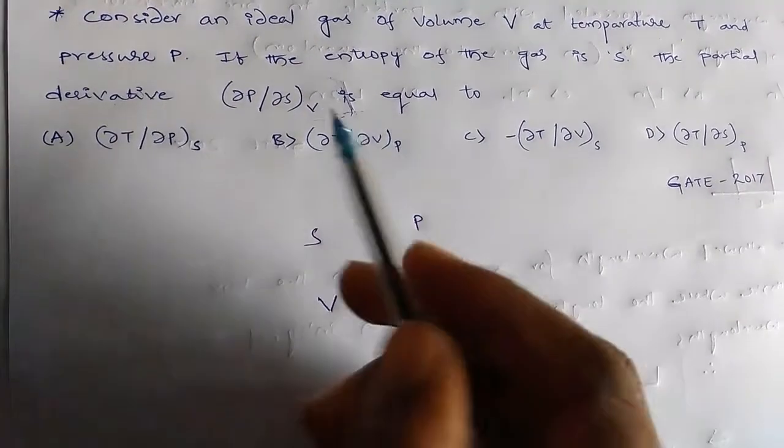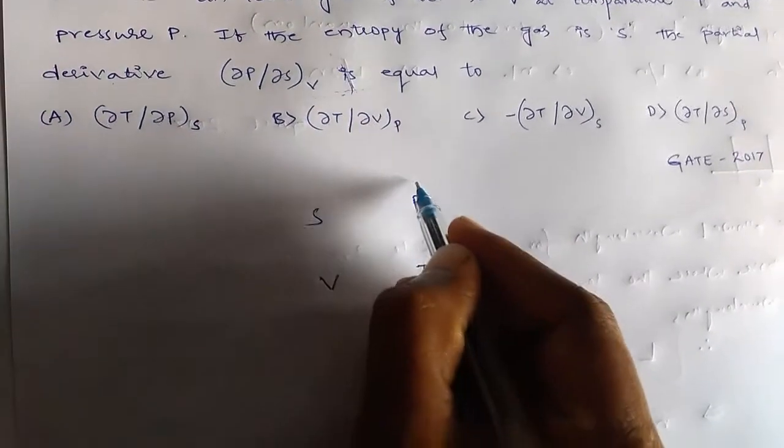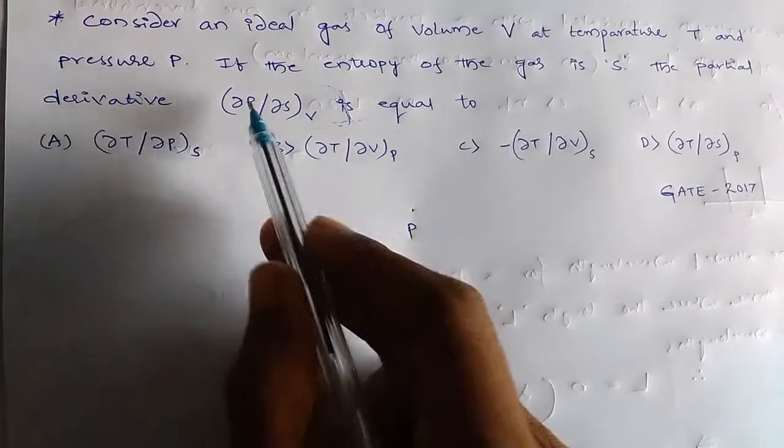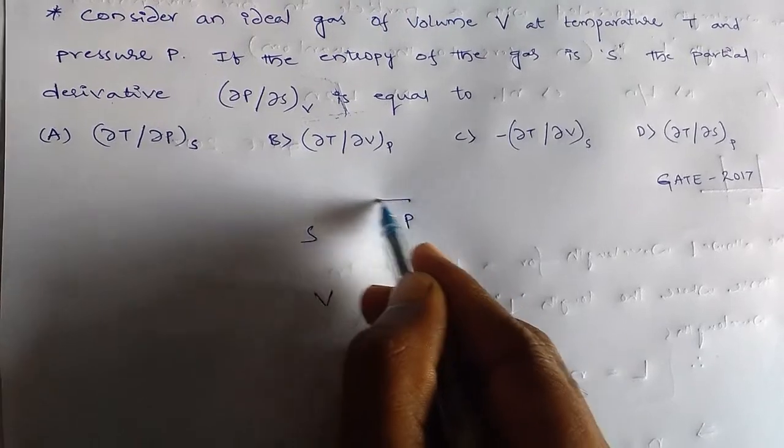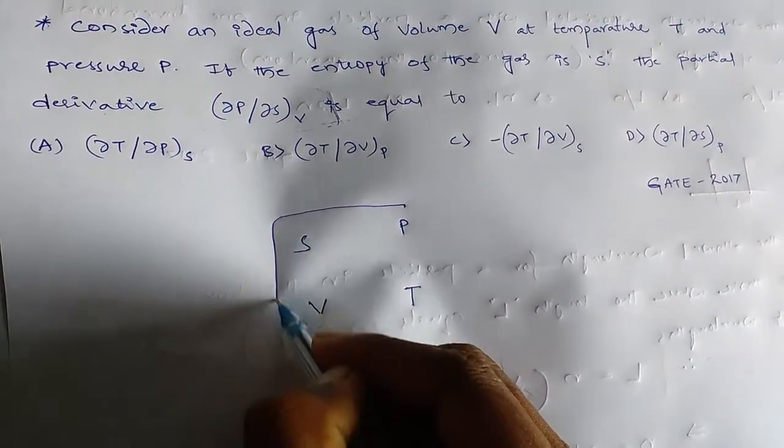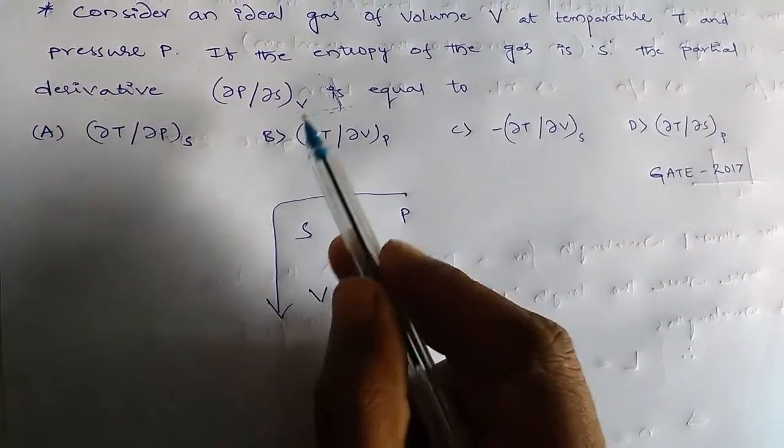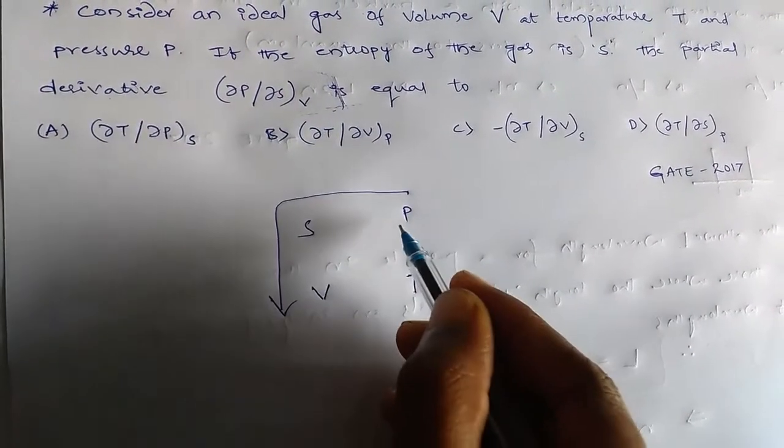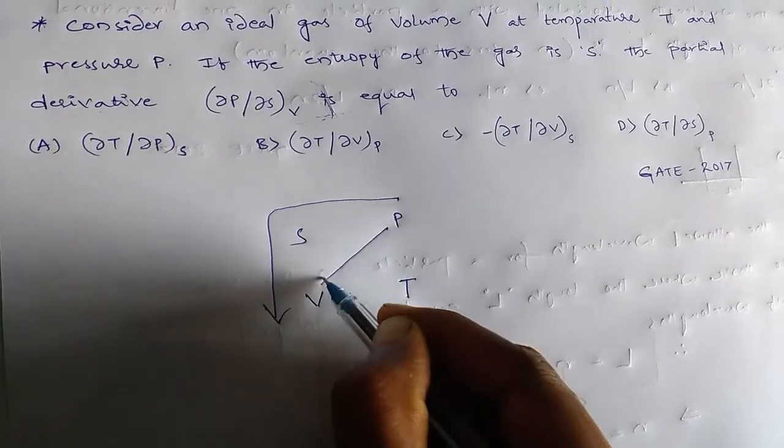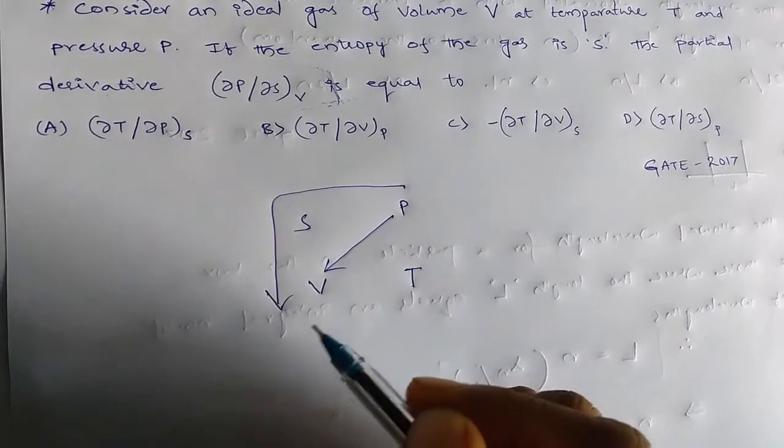Okay, so first ∂P. So we have started from ∂P/∂S. So like this. From ∂P/∂S at constant V, that means P to V.